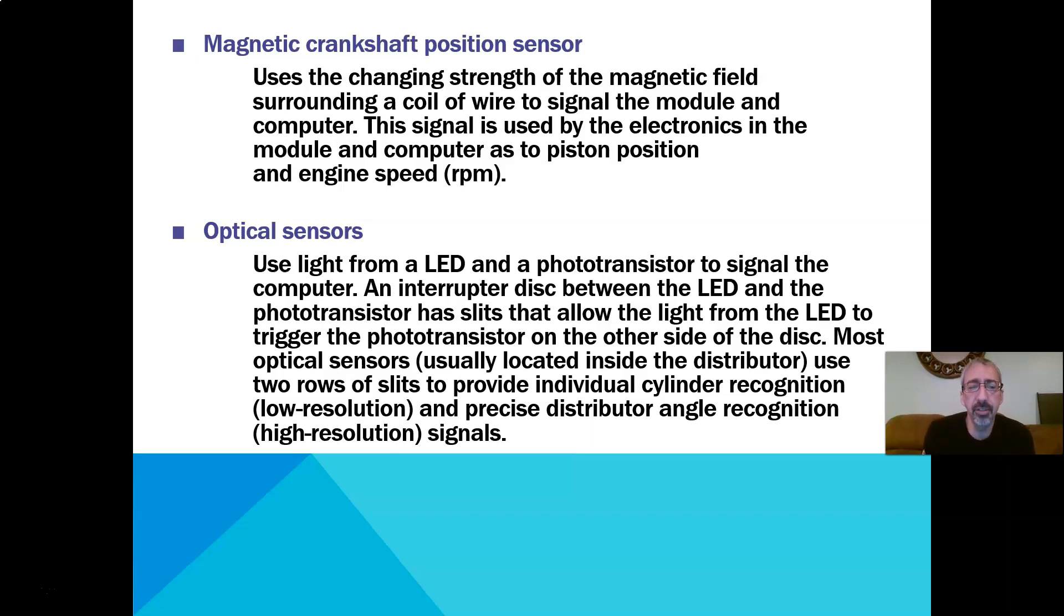When we go into other vehicles, we'll see that we have optical sensors. They use light from an LED and a phototransistor to signal the computer. There's an interrupter disk between the LED and the transistor that has slits that allow light from the LED to trigger that phototransistor. Most optical sensors are located inside the distributor.